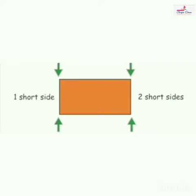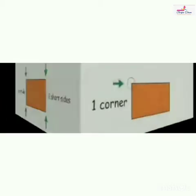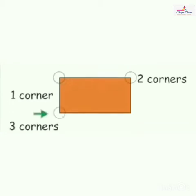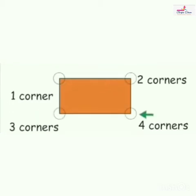Rectangle has corners. How many corners does a rectangle have? Let's count — there are four corners: one, two, three, four. Rectangle has four corners.